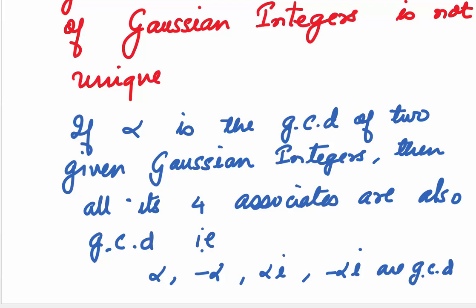If alpha is the GCD, then alpha, minus alpha, alpha i, minus alpha i all will be the GCD. And this is the reason we say that GCD is not unique.